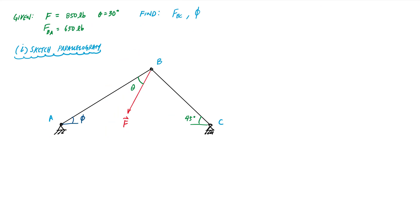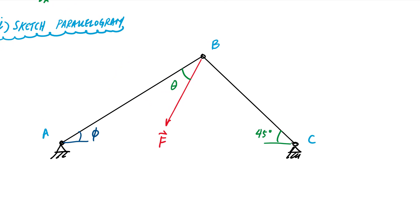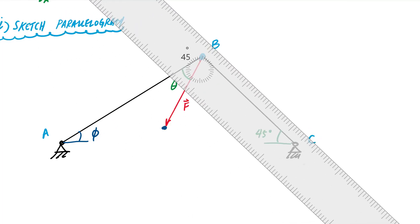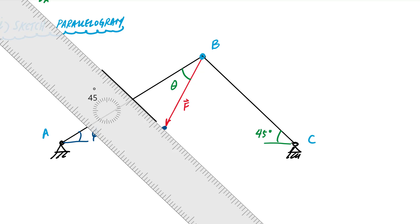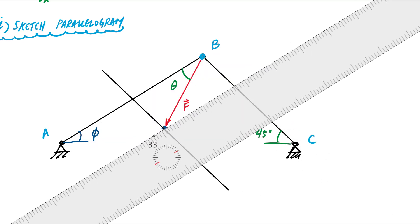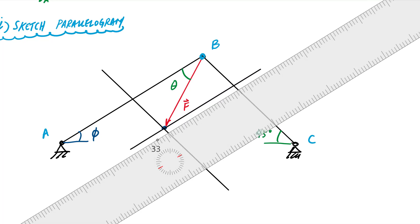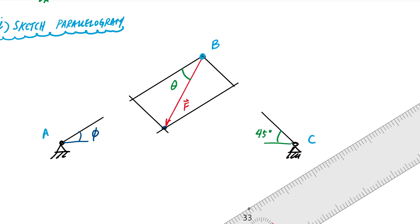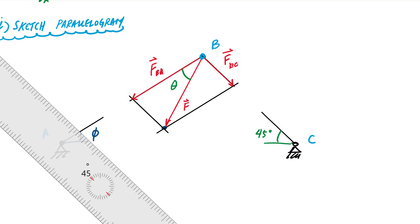I want to draw the parallelogram. I know the resultant force F, and point B is my concurrent point. From the head of the resultant vector I'll draw a line parallel to BC, and then a line parallel to AB from the head of the vector. That gives me my parallelogram. The vector addition relationship is F equals F_BA plus F_BC.